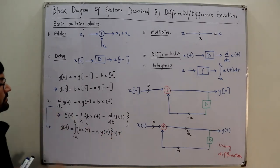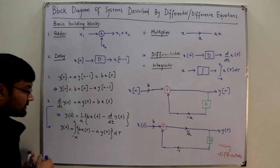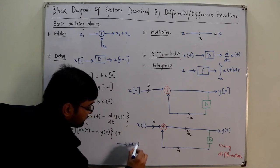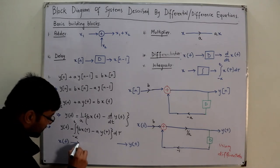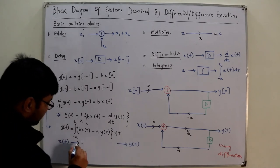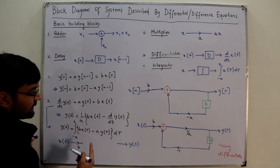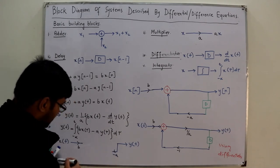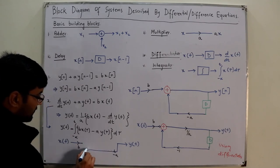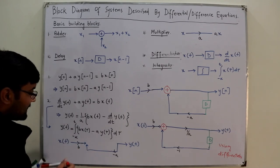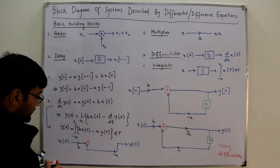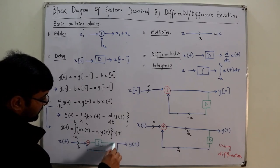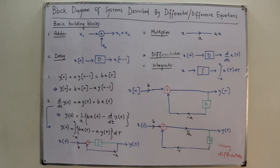Place x(t) as the incoming signal and y(t) as the outgoing signal. Multiply x(t) by b to get b·x(t). Feed back y(t) and multiply by −a to get −a·y(t). Add b·x(t) and −a·y(t) together, then pass the result through an integrator block to obtain the final output y(t).